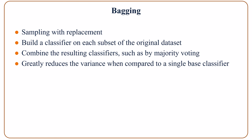Now let's talk about bagging. In this method we sample with replacement from the original dataset — we sample again and again so that we have multiple subsets of the original data. Then we build a classifier on each subset. After this step we have multiple trained classifiers, which we combine by majority voting.